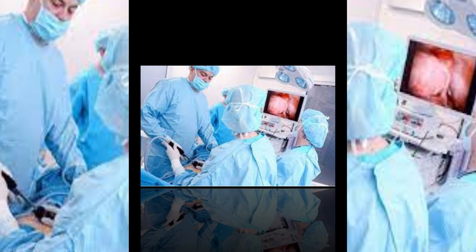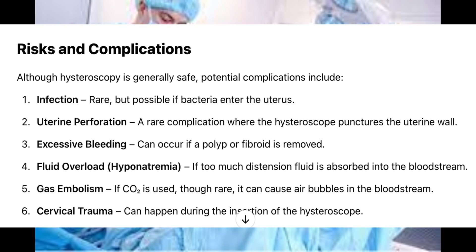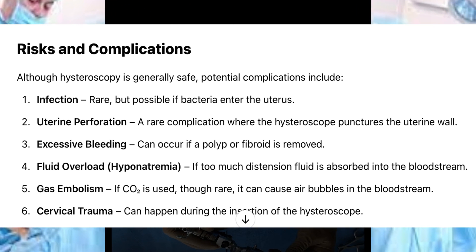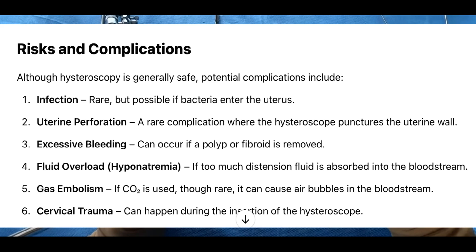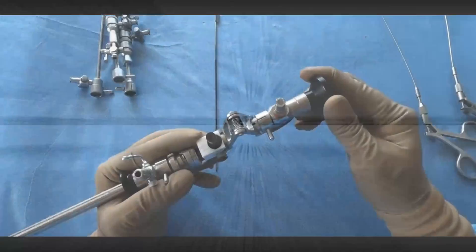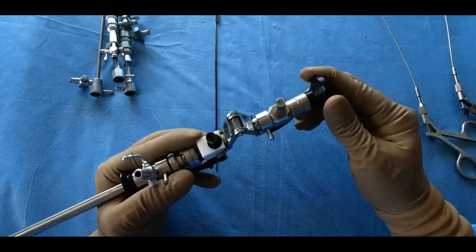Risks and complications. Although hysteroscopy is generally safe, potential complications include: 1. Infection — rare, but possible if bacteria enter the uterus. 2. Uterine perforation — a rare complication where the hysteroscope punctures the uterine wall. 3. Excessive bleeding — can occur if a polyp or fibroid is removed. 4. Fluid overload (hyponatremia) — if too much distension fluid is absorbed into the bloodstream. 5. Gas embolism — if CO2 is used, though rare, it can cause air bubbles in the bloodstream. 6. Cervical trauma — can happen during insertion of the hysteroscope.